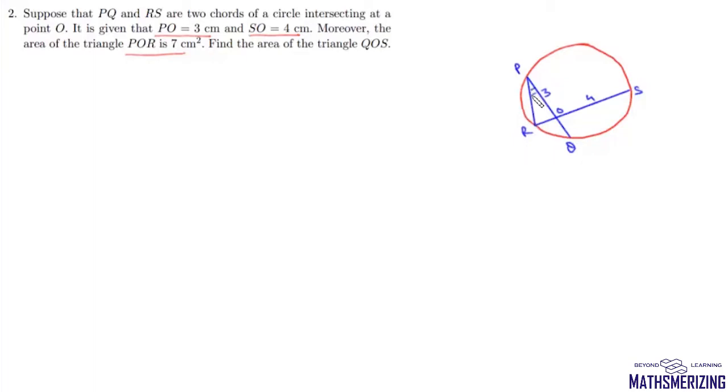The area of this triangle is 7 cm². We need to find the area of triangle QOS. So let this be A1 and let it be A2.